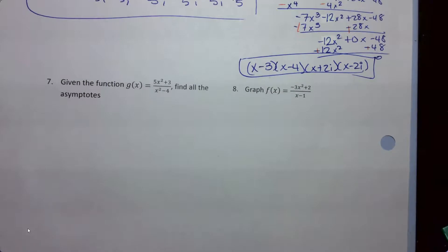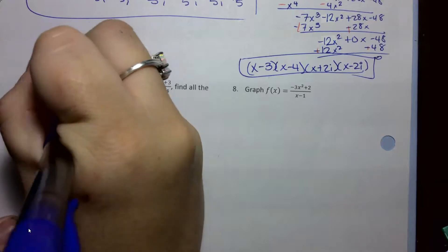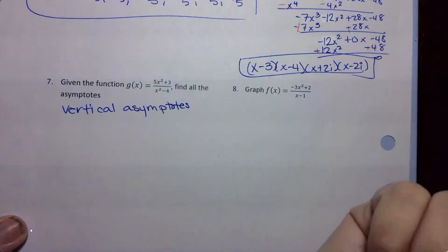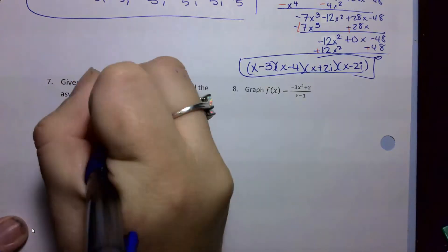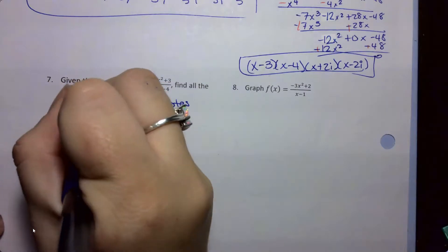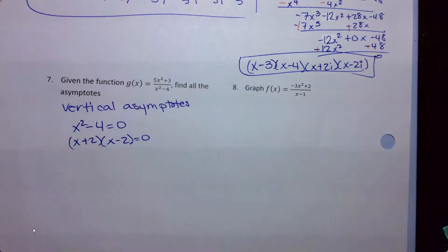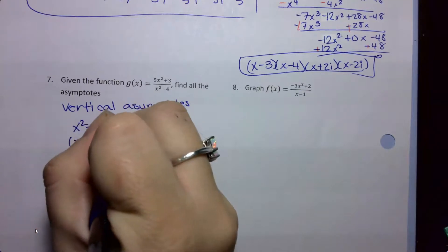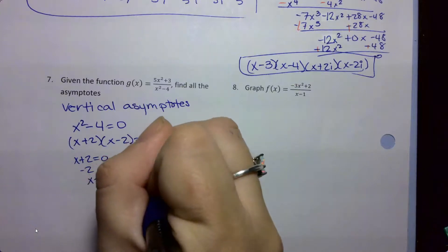Number 7 wants me to find all of the asymptotes given this function. First I'll find my vertical asymptotes — I take my denominator and set it equal to 0. So I have x squared minus 4 equals 0, then I solve by factoring. I get my two factors, set each equal to 0: x plus 2 equals 0 and x minus 2 equals 0. Solving gives x equals negative 2 and x equals 2. These are my vertical asymptotes.